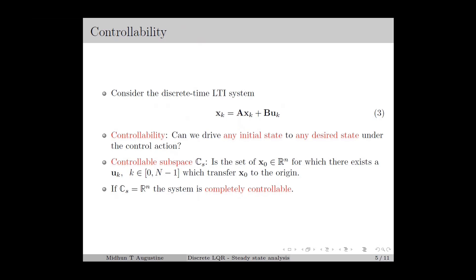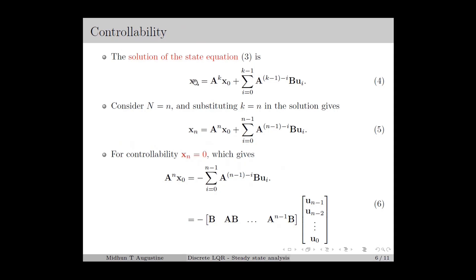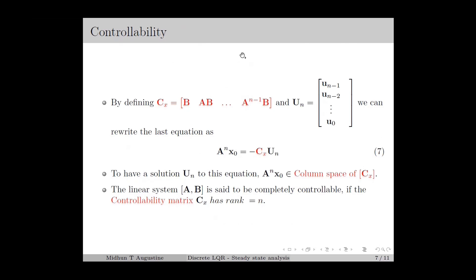Next, we derive the basic criteria for controllability of the discrete time LTI system. From basic linear system theory, we have the solution of the discrete LTI state equation as in equation number 4. We select the time horizon N as the order of the system, and by substituting k equal to N in the solution, we obtain equation number 5. Now, if we can find a control input which makes xN equal to 0 for any initial state x0, then the system is controllable. By substituting xN equal to 0 and rearranging, the summation expands as B times u(N-1) plus AB times u(N-2) up to A^(N-1)B times u0, which can be represented as a matrix product. By defining the matrix Cx and the input vector u_N, we can rewrite this as A^N times x0 equals minus Cx times u_N.